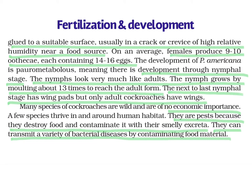The development of Periplaneta is paurometabolous, meaning development occurs through certain nymphal stages. The nymph is the young cockroach and looks very similar to the adult. The nymph grows by molting about 13 times to finally reach the adult form. The next-to-last nymphal stage has wing pads, but only adult cockroaches have wings.